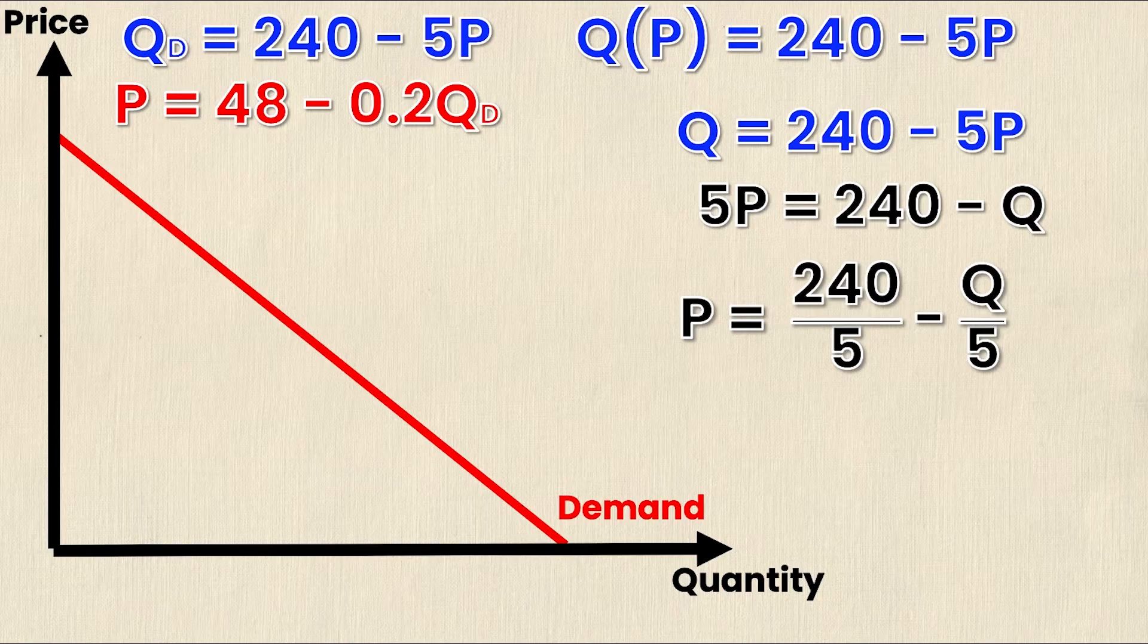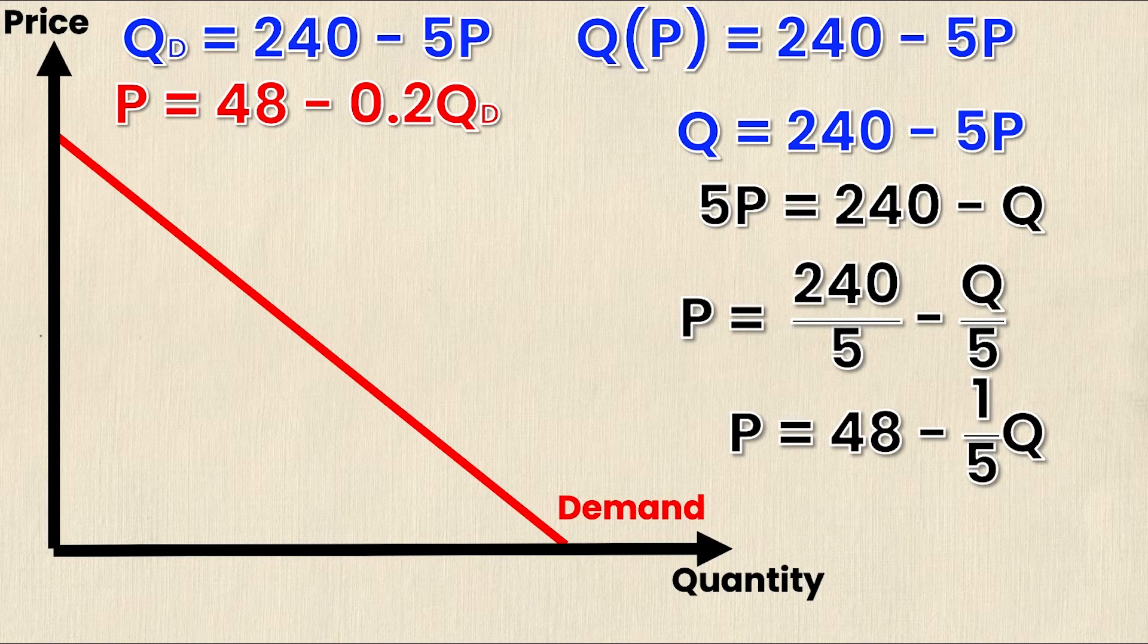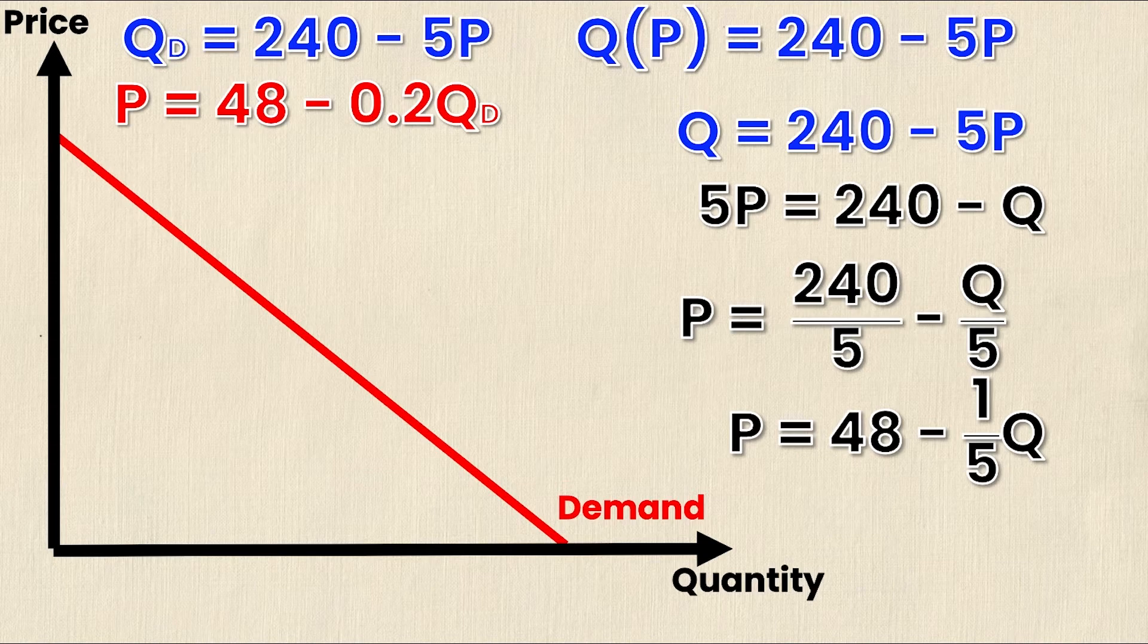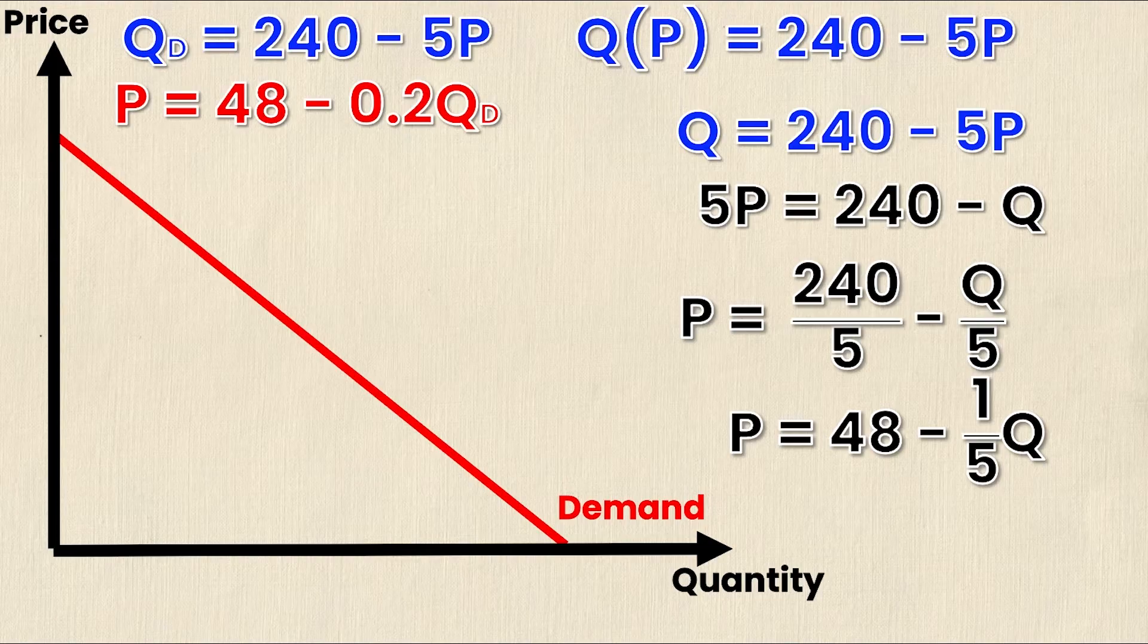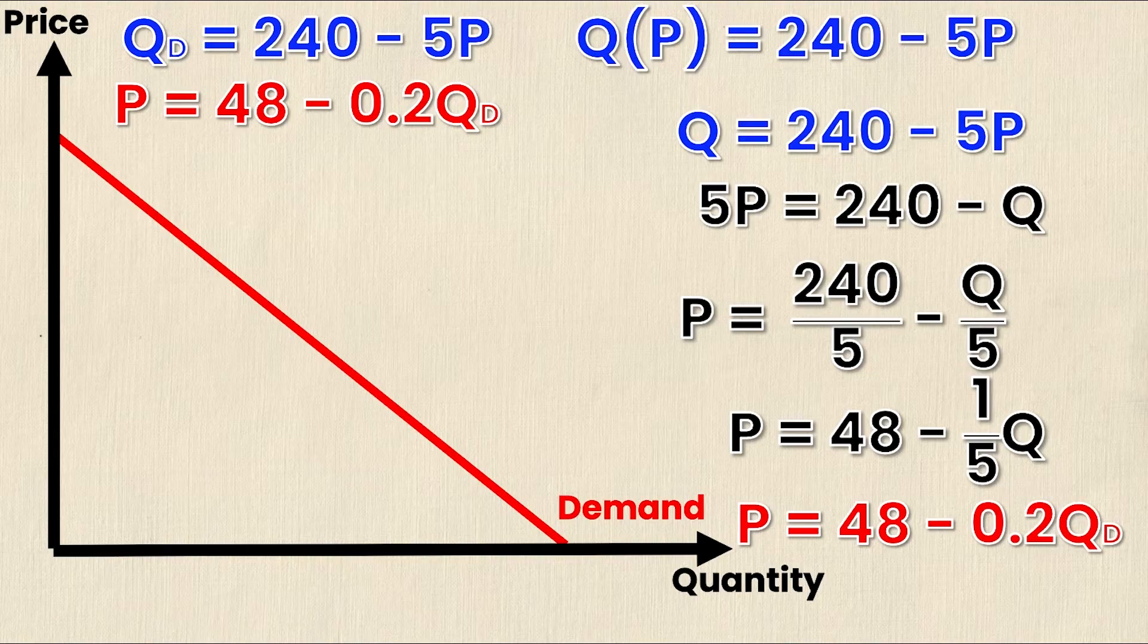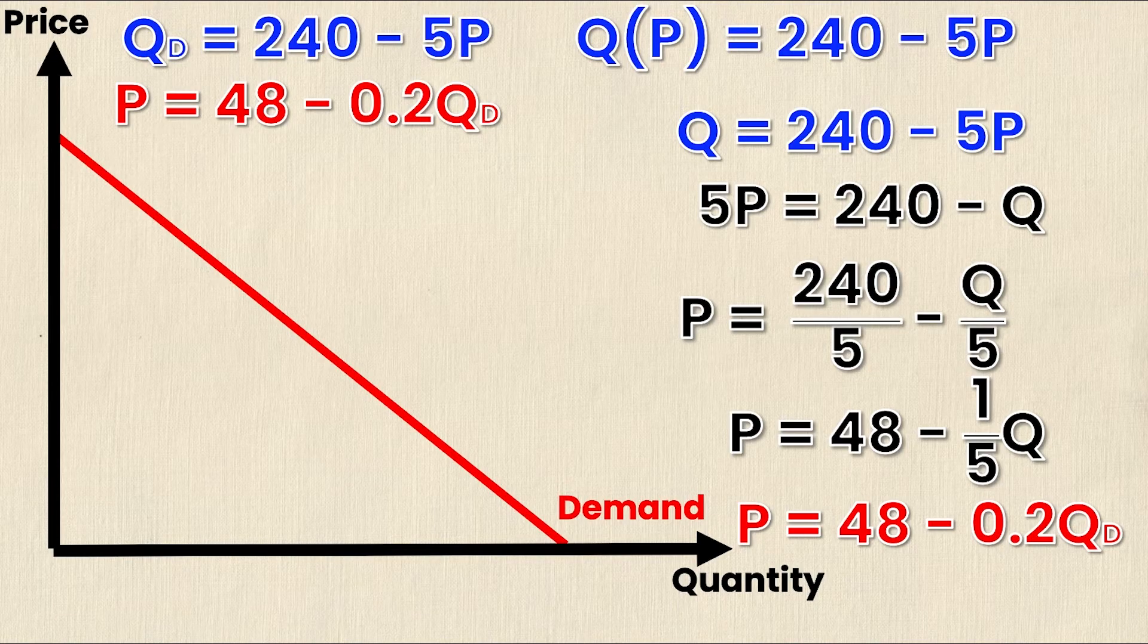I can simplify this further by solving for 240 divided by 5, which is 48. So now I have P equals 48 minus one-fifth Q. Q over 5 and one-fifth Q are the exact same thing. A lot of people prefer decimals if the decimal is finite, so I can turn one-fifth into 0.2, which yields P equals 48 minus 0.2Q_D.